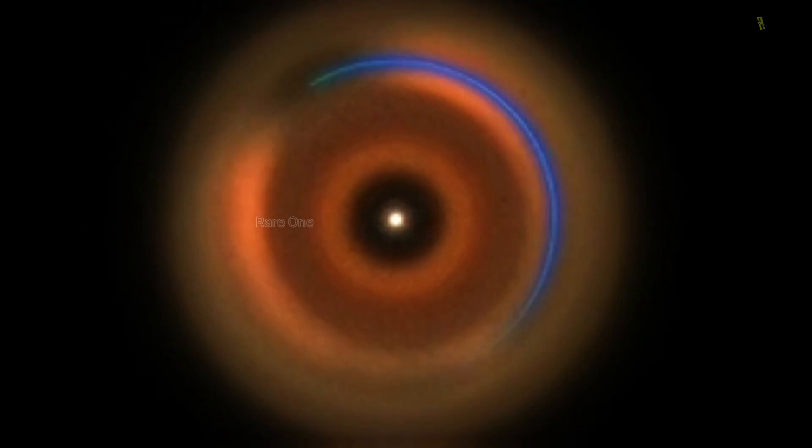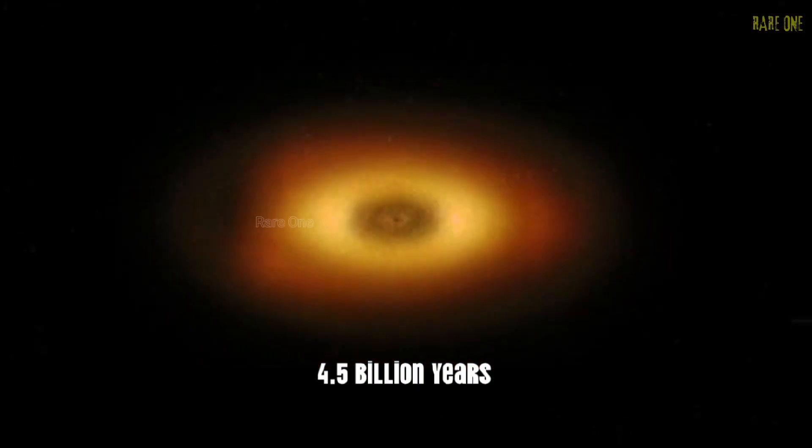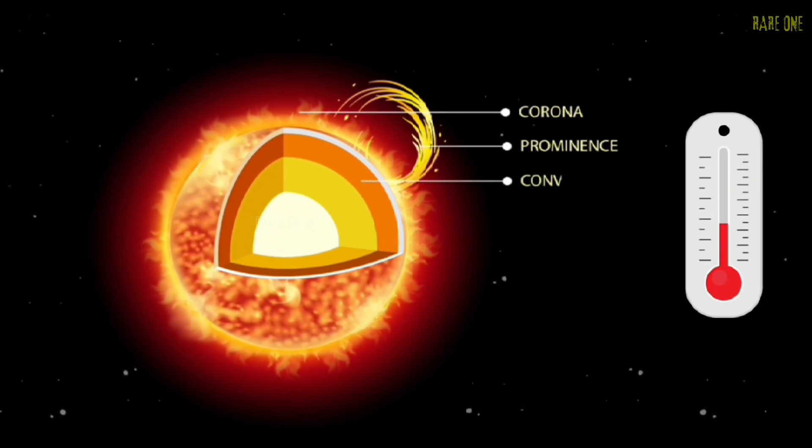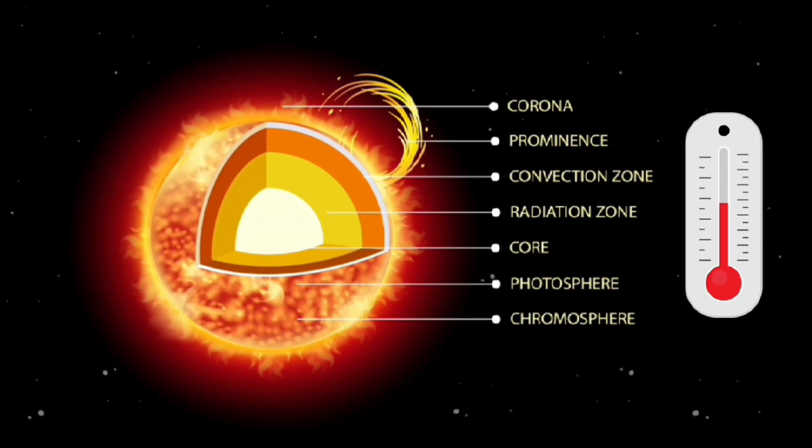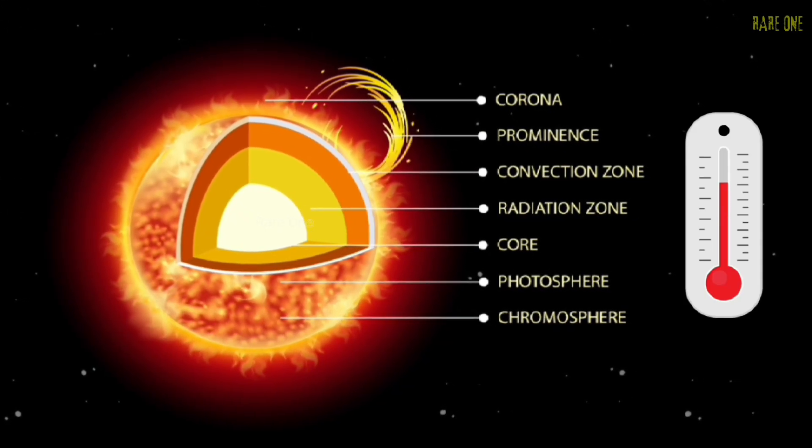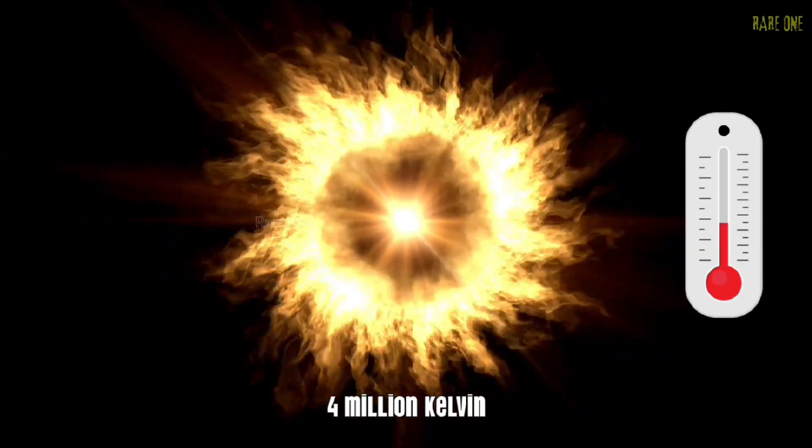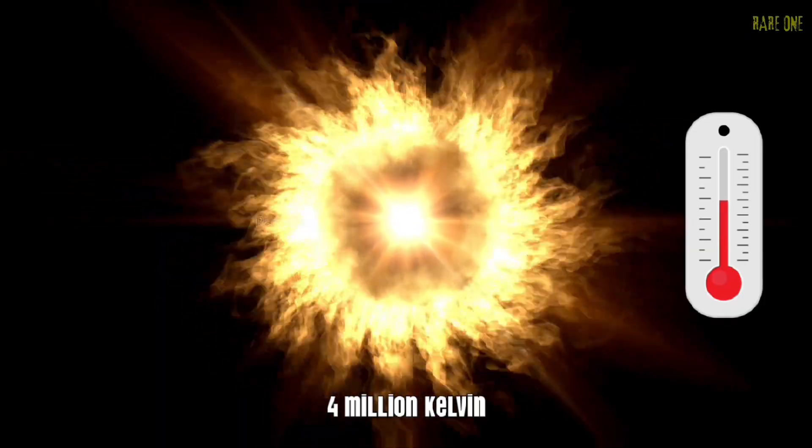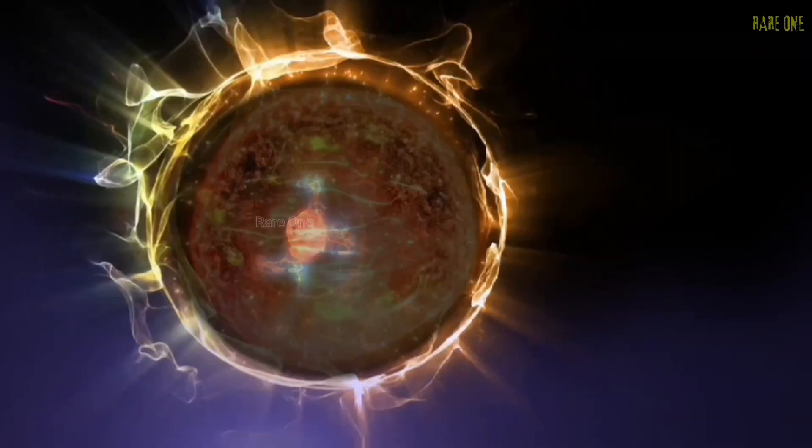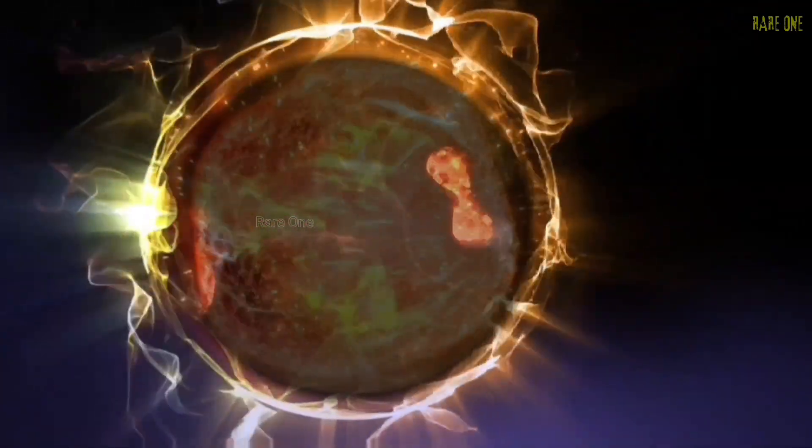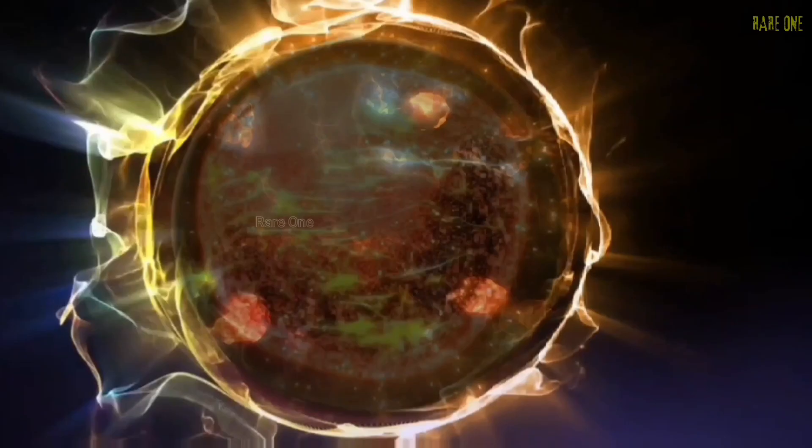As our proto-sun continued growing, something magical was happening. The material falling into it was heating up from gravitational compression. Slowly, steadily, the core temperature climbed higher and higher. And then, 4.56 billion years ago, it happened. The temperature in our sun's core reached 4 million Kelvin, hot enough for nuclear fusion to begin. Hydrogen atoms started fusing into helium, releasing tremendous amounts of energy. Our star was officially born.